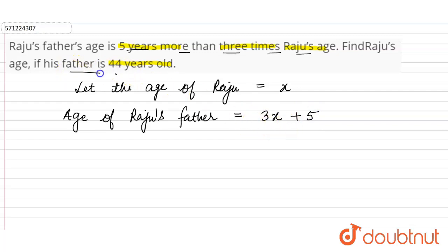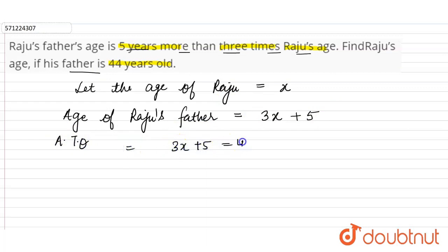In the question, it is given that the age of the father is 44 years. So according to the question, we can say that three x plus five is equal to 44. From here, we can get the value of x, which is Raju's age.